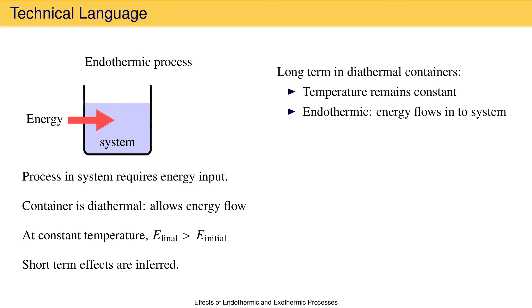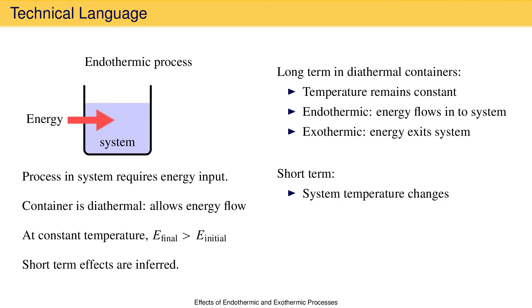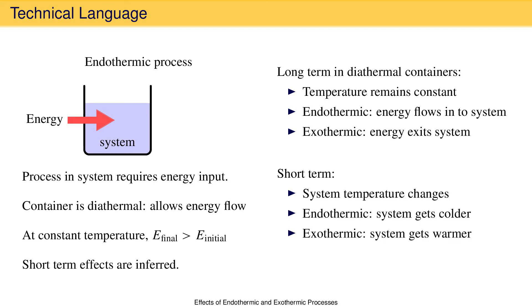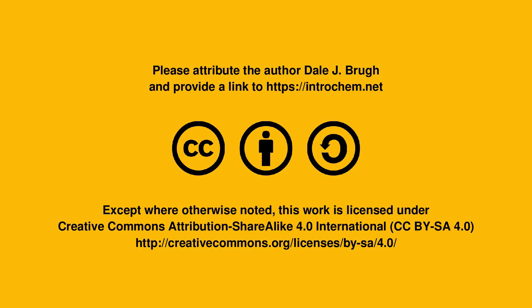In an endothermic process, energy will flow into the system, and in an exothermic process, energy will flow out of the system to make that possible. In the short term, the system temperature changes because energy cannot flow in or out of the system infinitely fast. The effect is that in an endothermic process the system temperature decreases, and in an exothermic process the system temperature goes up. And that's the effects of endothermic and exothermic processes.